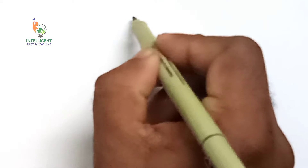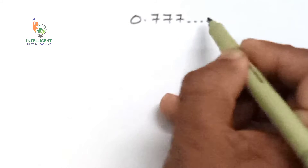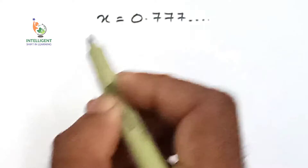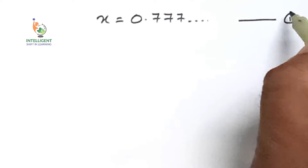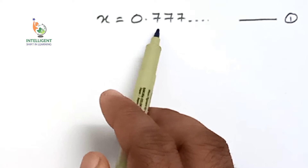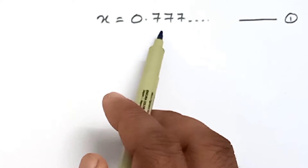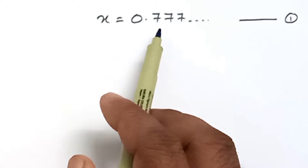Next question: express 0.77... in rational form. In this question also, we will consider x is equal to 0.77... — take this as equation number one. Here, only the digit 7 is repeating. Since only one digit is repeating, we will multiply both LHS and RHS by 10.